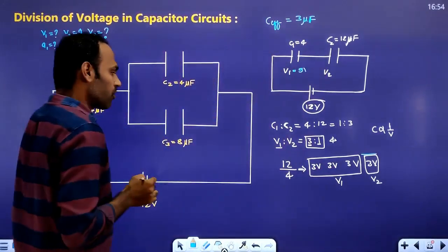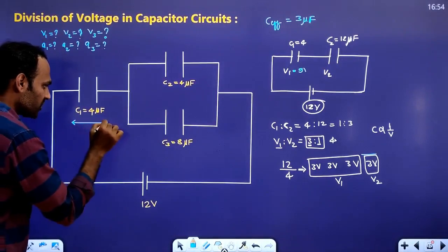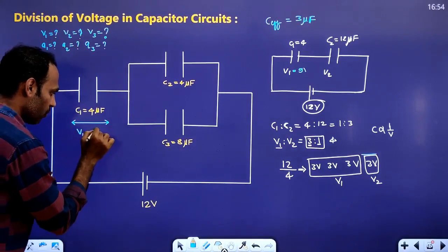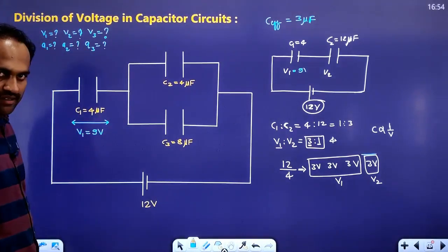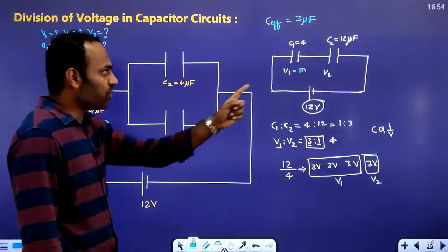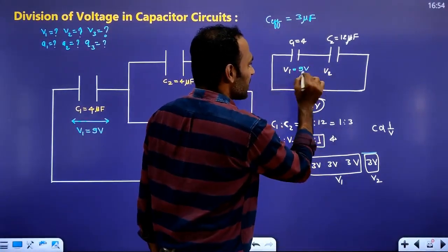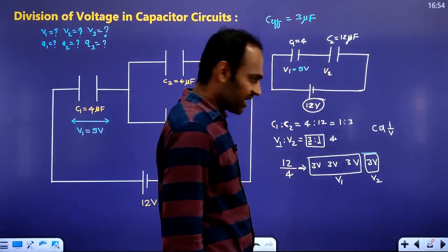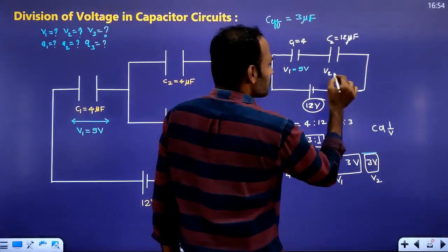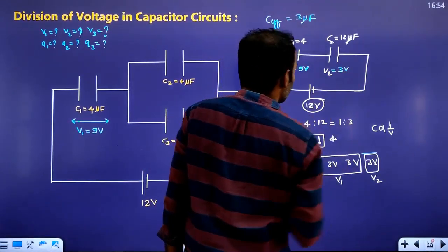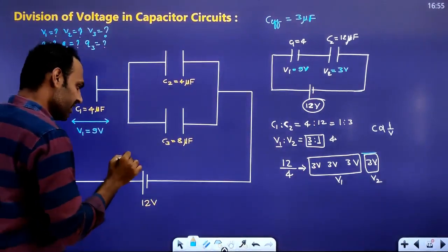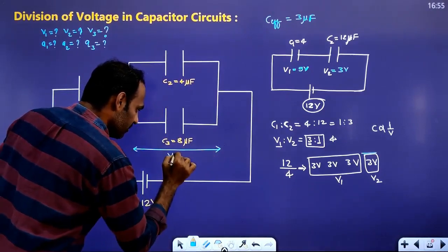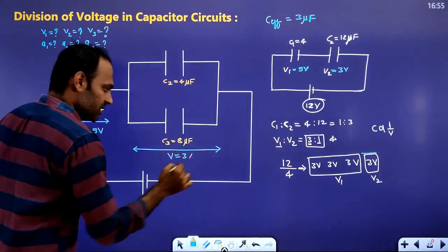The potential difference V1 is 9 volts across the 4 microfarad capacitor. V2 corresponds to ratio value 1, so V2 is 3 volts. Checking: 9 plus 3 equals 12 volts total — correct. So V2 equals 3 volts.